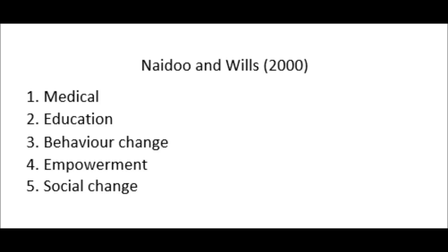The final element is a social change approach, which can be boiled down to saying that we need to change the physical, social, and economic situation in which people live. In order to do that, we need policy or redistribution of resources and wealth to make a difference to people's health. That's Nader and Wills from 2000 — a really popular model because it discusses the broad range of activities that could constitute health promotion.